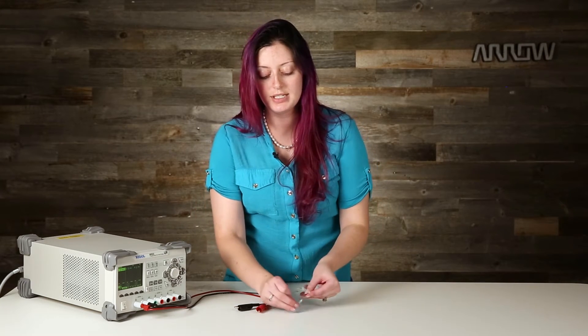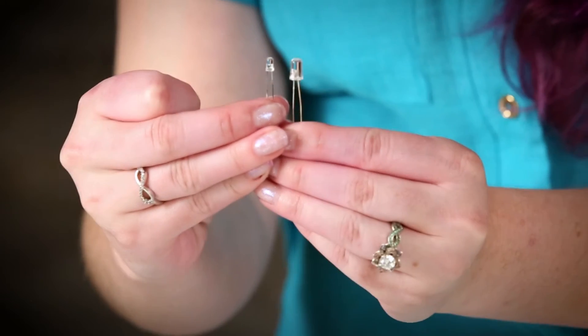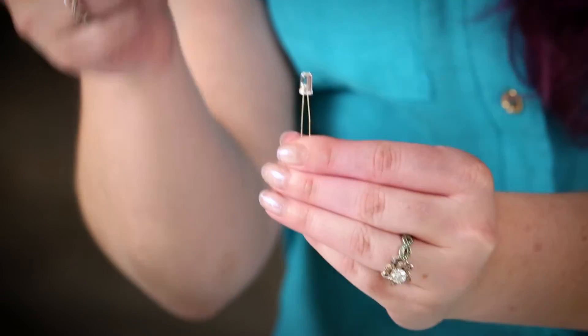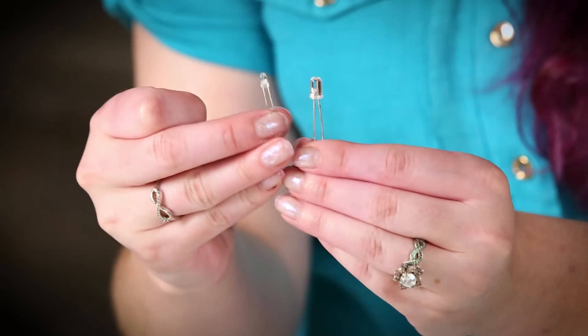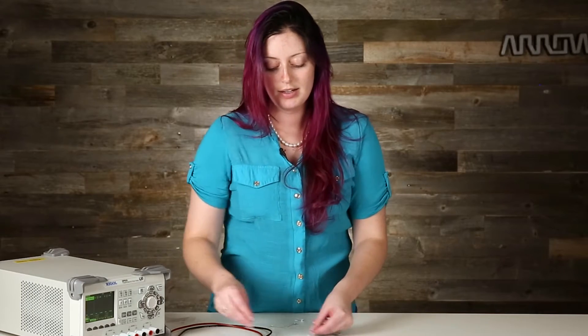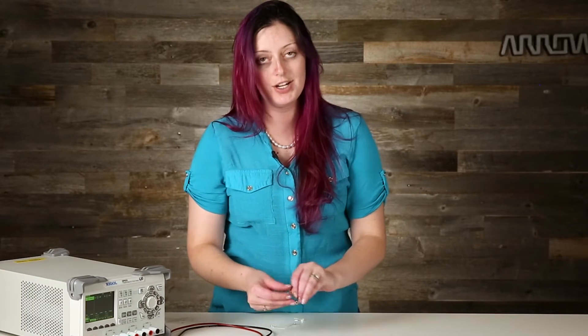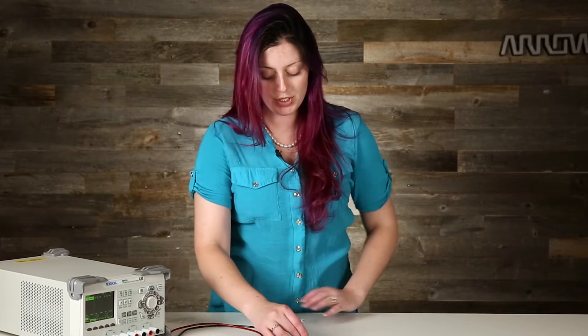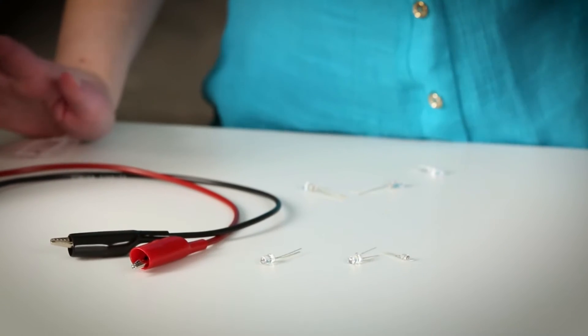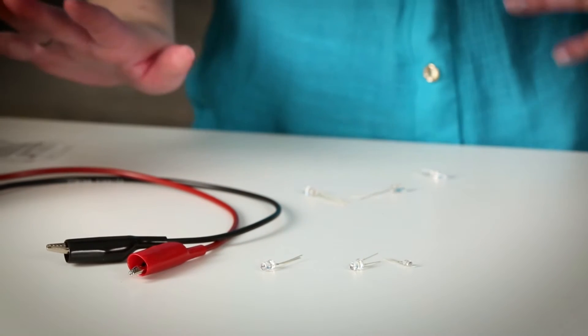This is a 3mm or T1 package. You can see the difference there. So if you're ordering a bunch of colors and you accidentally end up with these instead of these it makes a big difference. These are all considered indication LEDs rather than lighting LEDs. So they usually have a forward current of about 20 milliamps is about where they're happy for all the different colors.